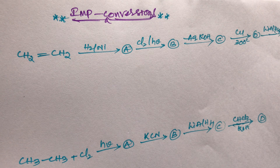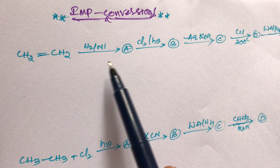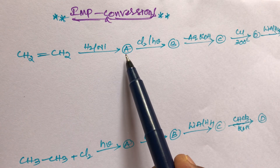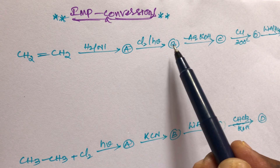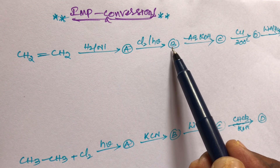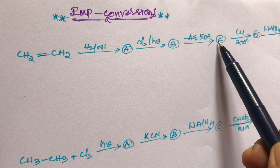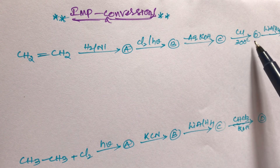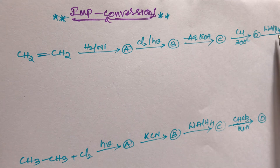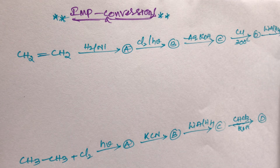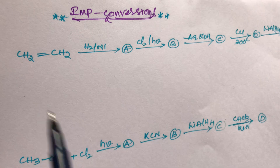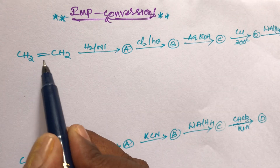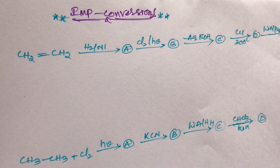In the first conversion: ethylene reacts with hydrogen in the presence of nickel to give compound A. Compound A reacts with chlorine to give B. Compound B reacts with aqueous KOH to give C. Compound C reacts with copper at 300°C to give D. Compound D reacts with lithium aluminum hydride to give compound E. Now let's work through each step.